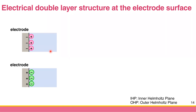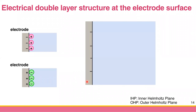But this is the simple model, which is not 100% accurate. The actual model is given in your handout. What if we apply the negative potential to the electrode? If we apply the negative potential to the electrode in the solution, what's actually going to happen is that you're going to have the molecule of the solvent on the electrode surface — so that's the actual first layer.